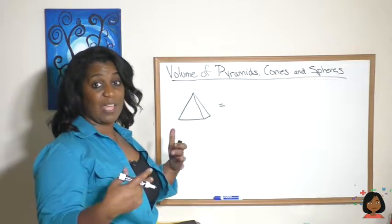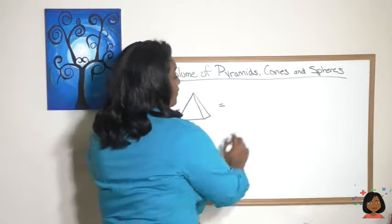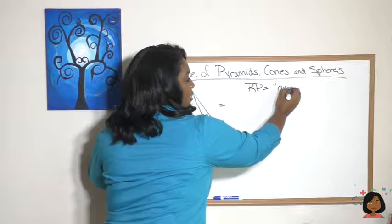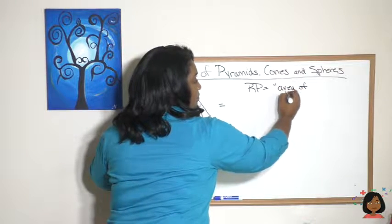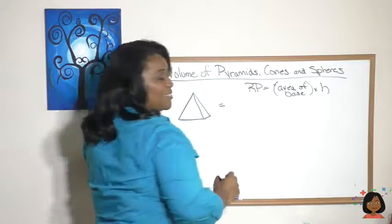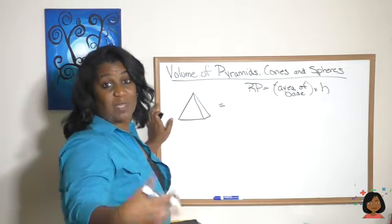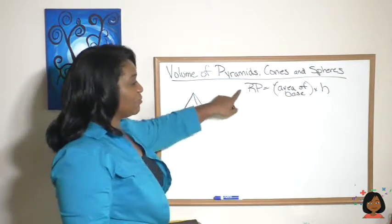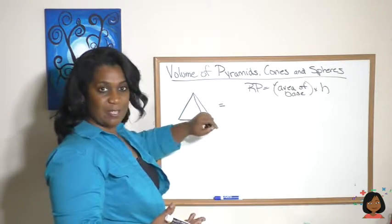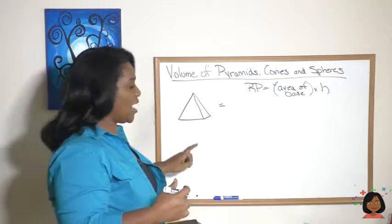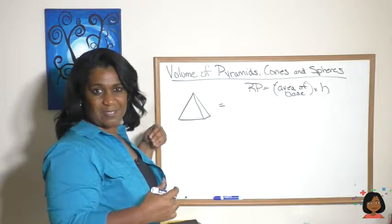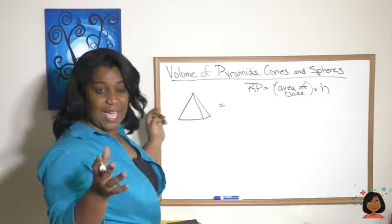You might remember that the volume of a rectangular prism is the area of the base times the height. Some people also say length times width times height. Well, it turns out that the rectangular prism and the pyramid have a relationship: the rectangular prism is three times the size of a pyramid that has the same dimensions of the base.